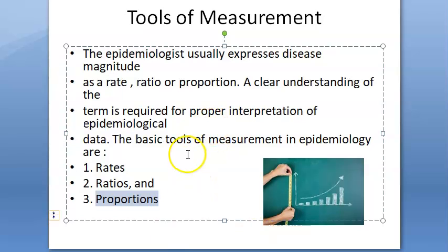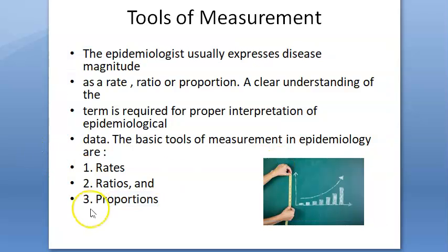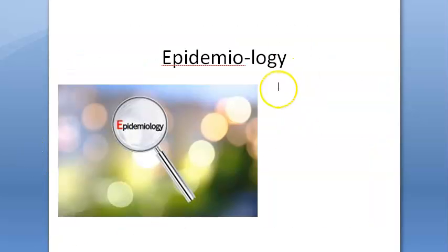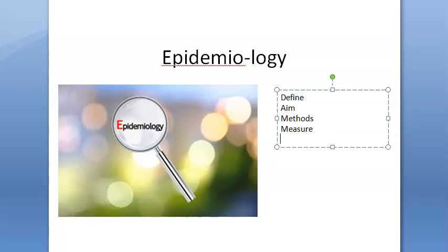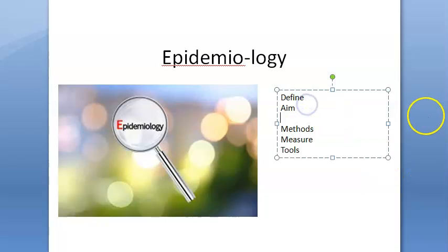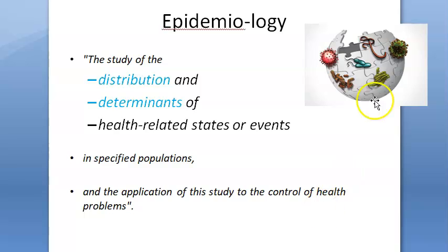To summarize what was covered in this video: what epidemiology is, the aims of epidemiology, the methods — observational studies including descriptive and analytical, and experimental or interventional studies — what you measure such as mortality rate, morbidity rate, and the tools to measure: rates, ratios, and proportions. Also, the epidemiological approach is to ask questions and make comparisons.